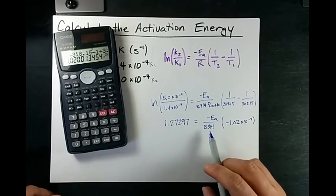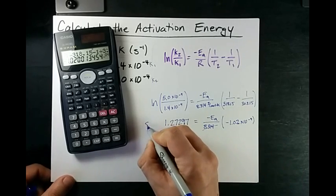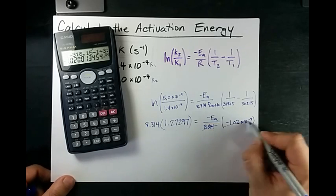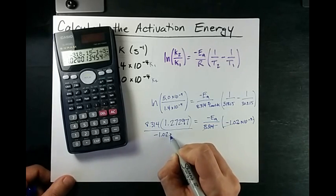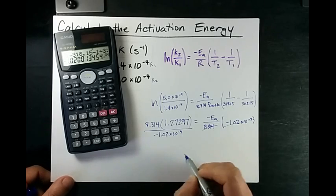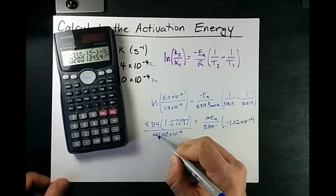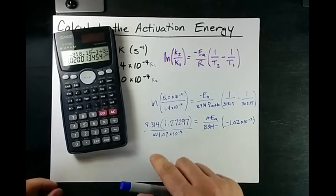Now to solve for EA, I'm going to multiply both sides by 8.314 and I'm going to divide both sides by negative 1.02 times 10 to the negative 4. Note too, that that negative will cancel with that negative. And I've already isolated my activation energy. So let's do that.